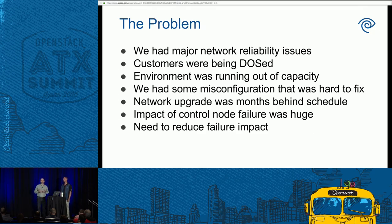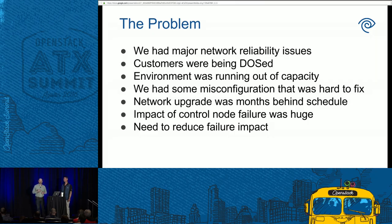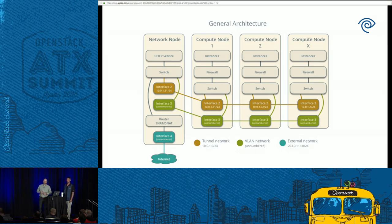We started working on all of the problems because we knew we had more than one. But specifically, one of the solutions we were looking at was whether there were other network architecture or Neutron deployment options that would help us alleviate this issue. Moving to dedicated network nodes was one of the things we were most interested in looking at.